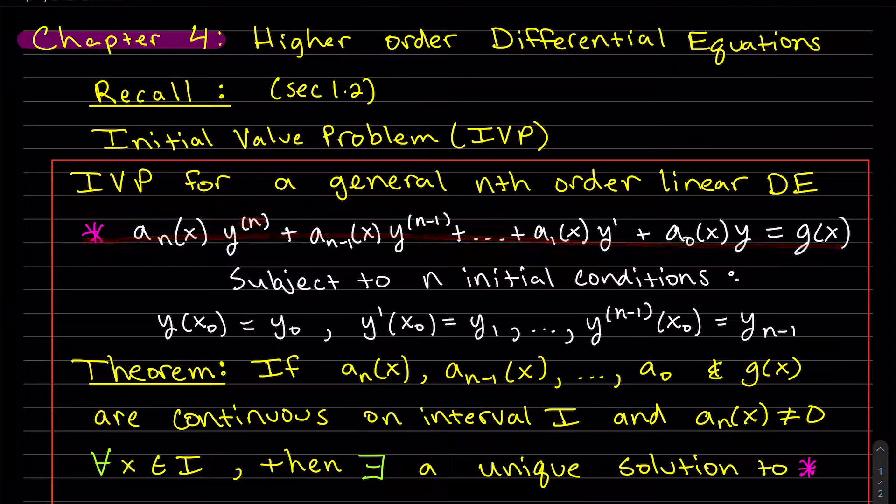So the initial value problem for a general nth order linear DE, which is right here, it's nth order because it has the nth derivative in it, and these are just functions in terms of x. This nth order linear differential equation is subject to n initial conditions. What I'd like for you to notice, though, is that all of these x values must be the same. Of course, the y values are different, but there are n of them for an nth order. So last section, we usually had one of them for our first order.